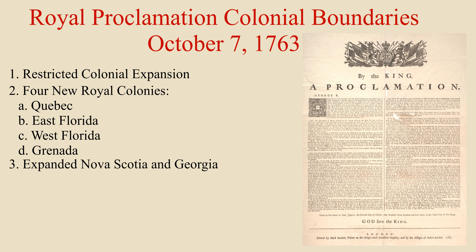These new colonies were established with royal governors, and when the people of each colony were able to, they could establish their own general assemblies. To reward the soldiers who fought in the war, each veteran was given land according to their rank. The new and old colonies were then ordered to respect the territory belonging to the natives who sided with the British during the war, and to not even survey their land.